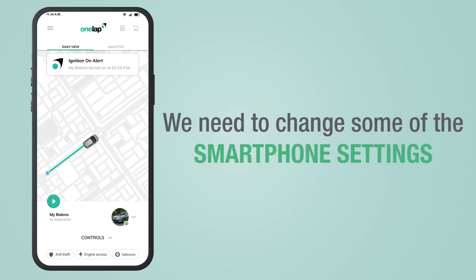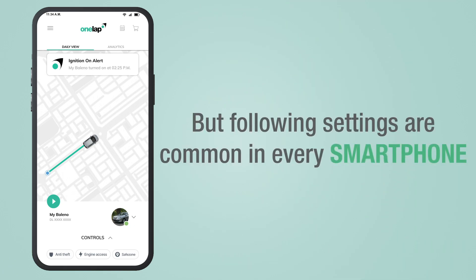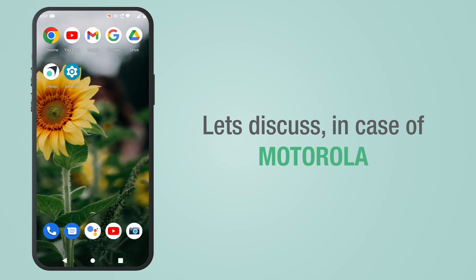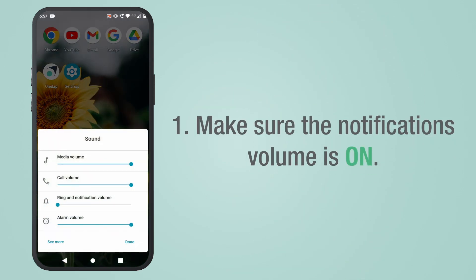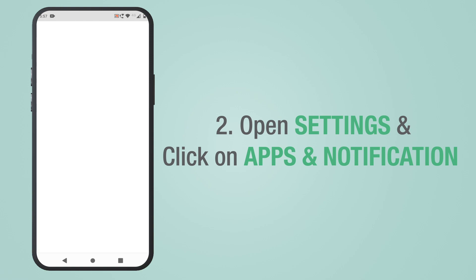In order to fix this issue, we need to change some of the smartphone settings. Settings may vary in different smartphones, but the following settings are common in every smartphone. In the case of Motorola, make sure the notifications volume is on. Open Settings and click on Apps and Notifications.